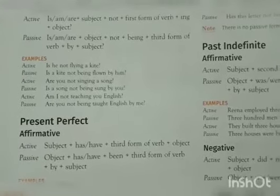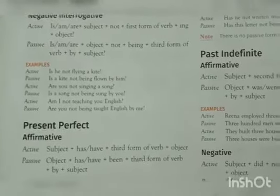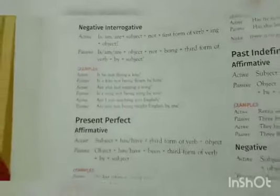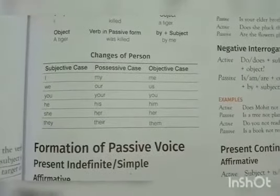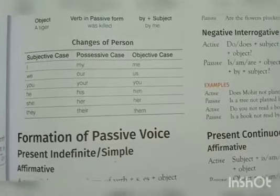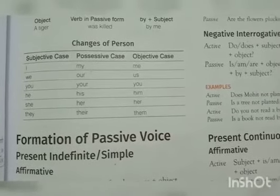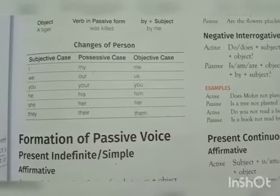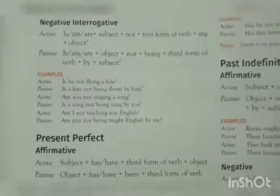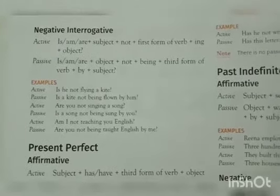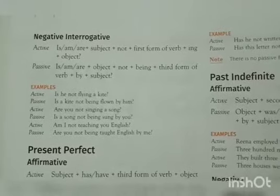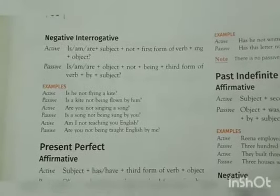As you can see, in place of 'I', 'you' is used in the passive form. You can see here how the subjective case changes to possessive and objective case — 'I' becomes 'my' in possessive and 'me' in objective case. This was the example for the interrogative negative. I hope it's clear. You just need to follow the rules given for the formation of active to passive.